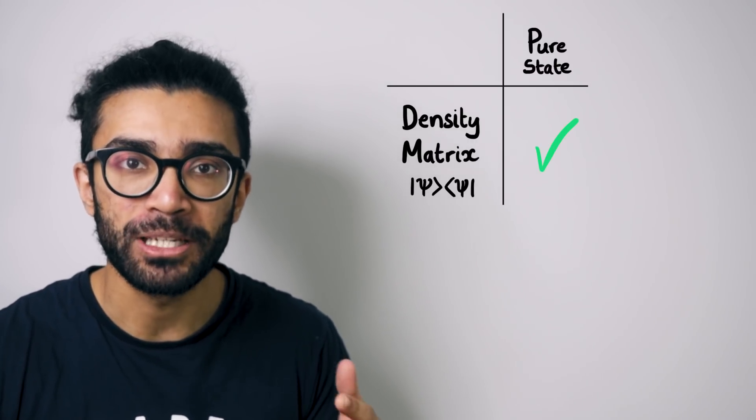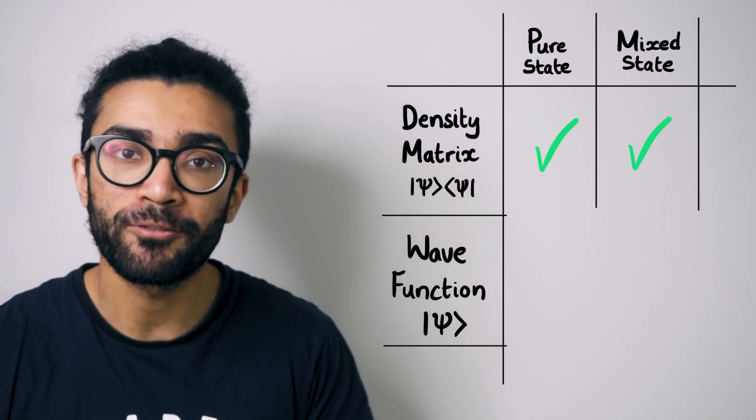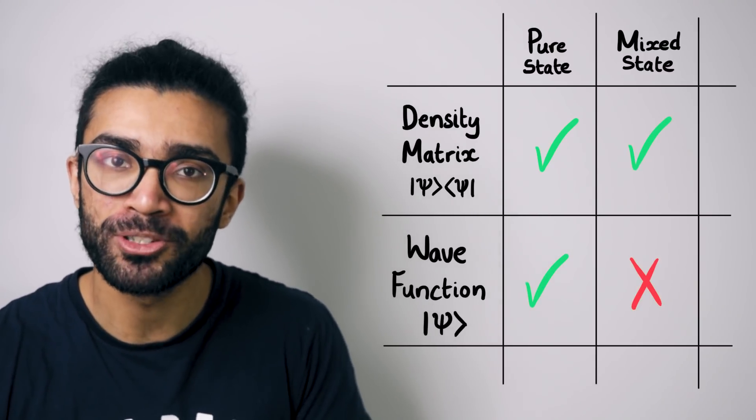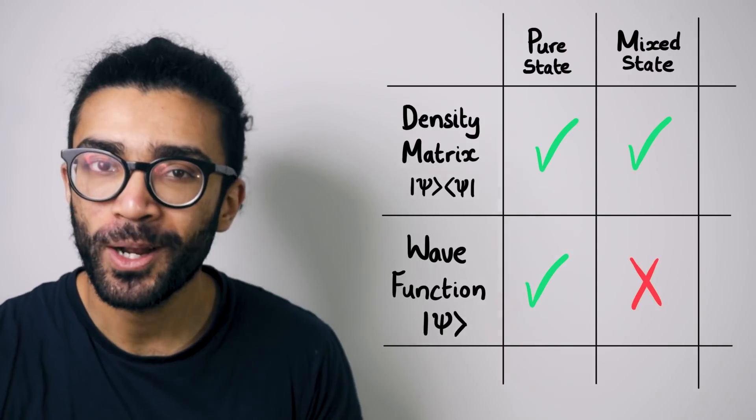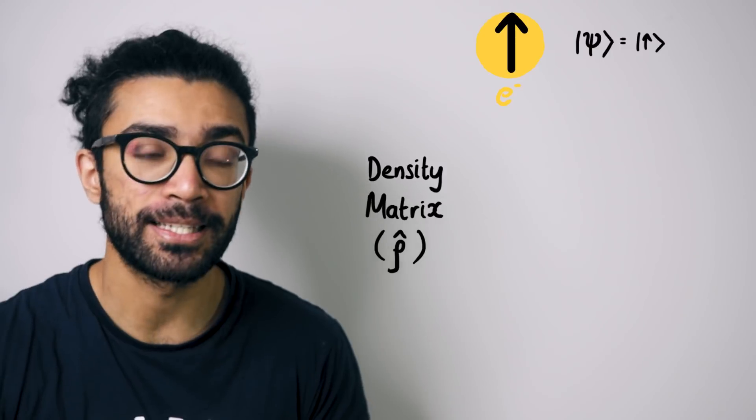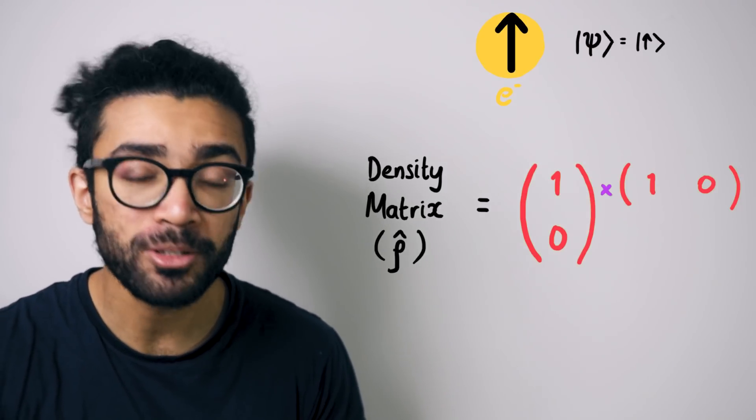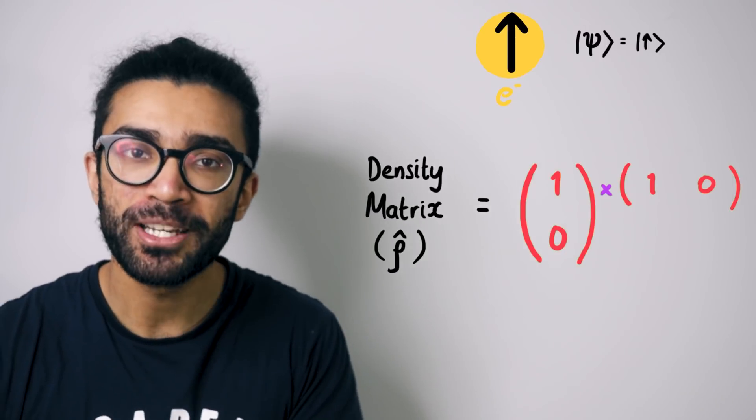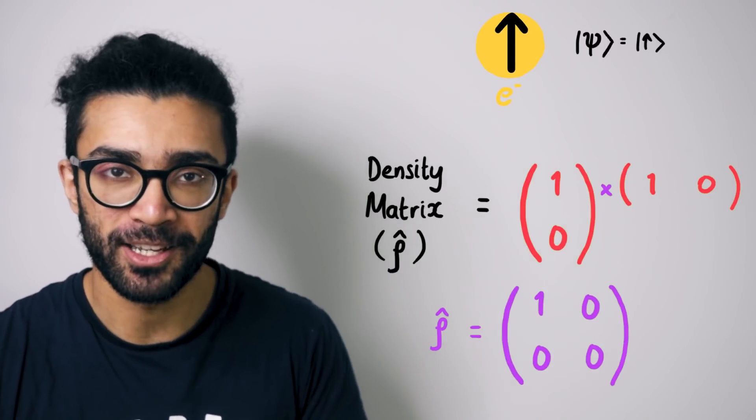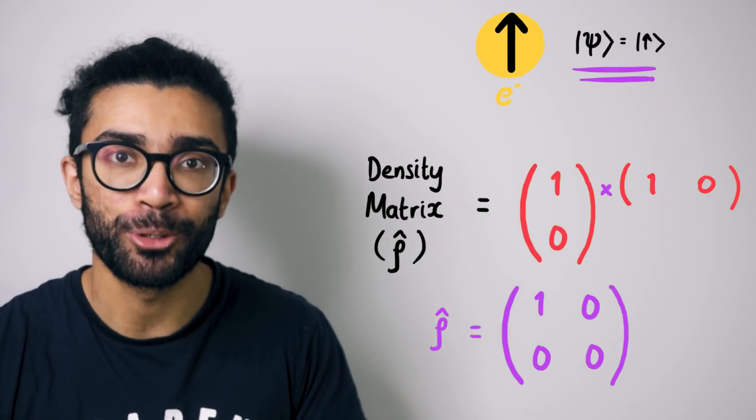Now it turns out that we can find a density matrix for a pure state as well. In other words, density matrices can be used to represent pure states as well as mixed states, but single wave functions or single vectors can only be used to represent pure states. So the way to find the density matrix for, say, this particular pure state is to take the column vector, turn it into a row vector, and then multiply them together. If you're familiar with matrix algebra, then you'll realize that this gives us a matrix. This is the density matrix that represents this pure state.